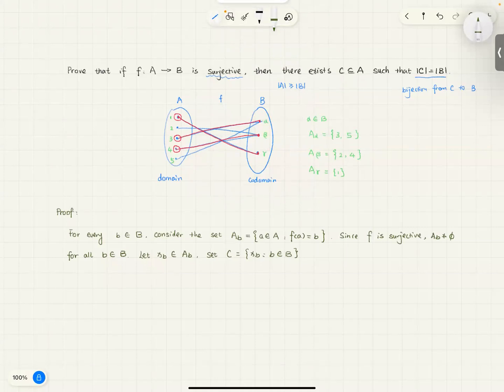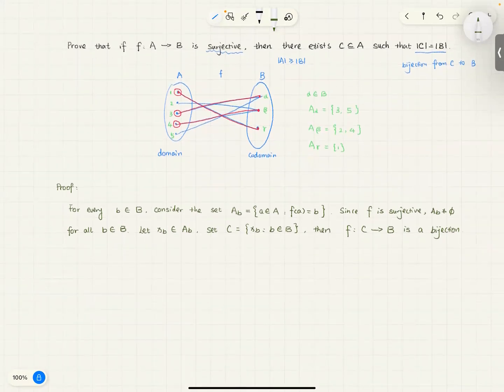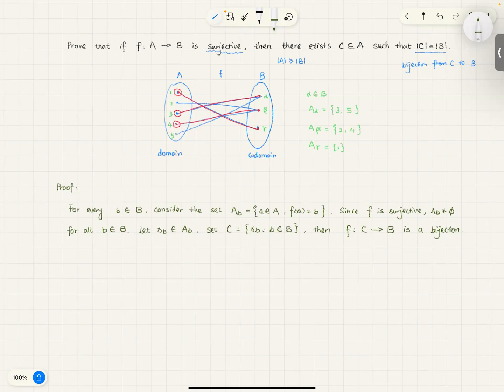So, set C be thus, then f mapping from C to B is a bijection. And now, why is it bijective? Well, it's surjective because the original function is surjective already. So let's show injectivity. I'll quickly go over this.